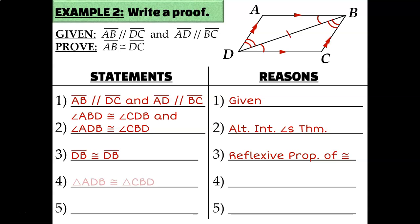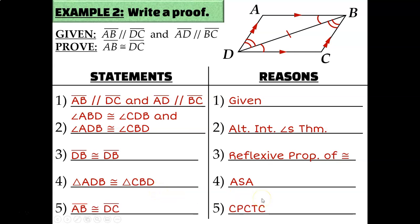Now I have enough to say the two triangles are congruent by the angle-side-angle triangle congruence theorem. Since those triangles are congruent, are AB and DC corresponding parts? Yes — AB are the first and last letters of the first triangle, and D and C are the first and last letters of the second. So AB is congruent to DC by CPCTC — corresponding parts of congruent triangles are congruent.